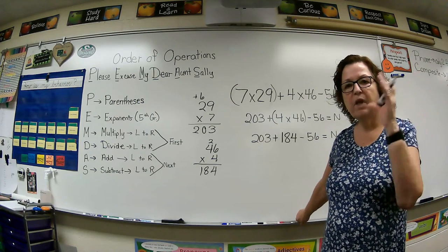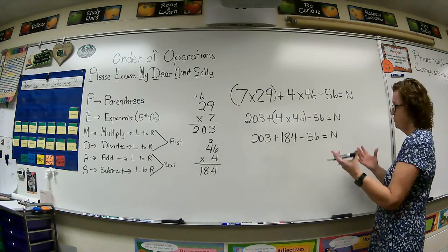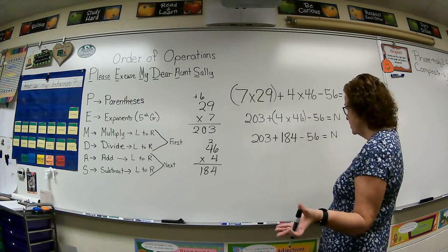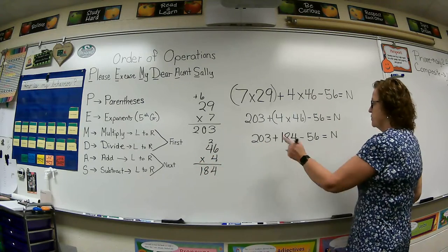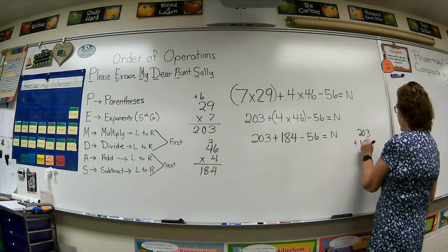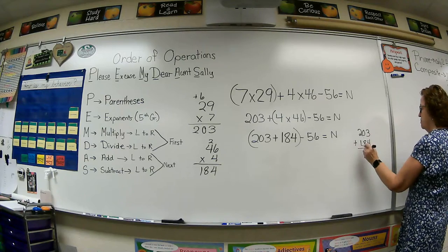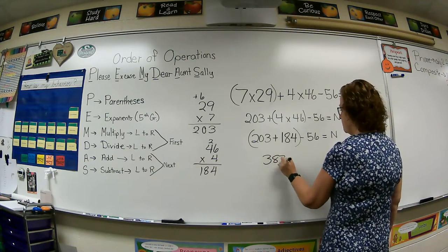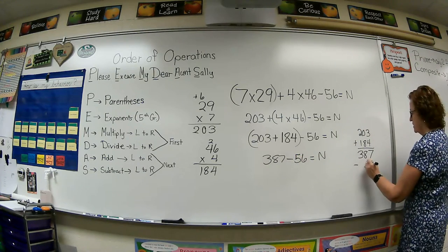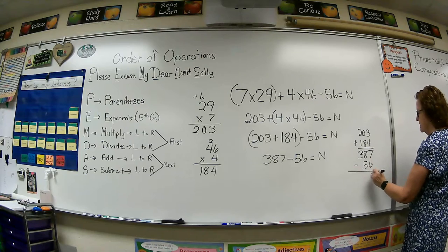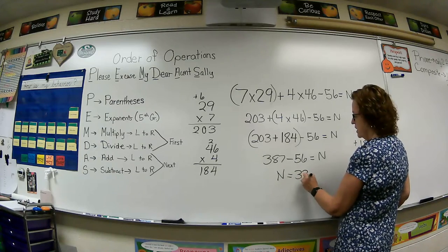I don't know about you, but it's kind of fun to work it through and work it down and keep going through our order of operations. So, taking care of all multiplication, all division, and now we've got some adding and subtracting. Well, according to our order of operations, we go left to right on that. So we're going to do 203 plus 184 first. 3 plus 4 is 7. 0 plus 8 is 8. 2 plus 1 is 3. So 387. Bring this part down. Minus 56 equals N. I'm going to do 387 minus 56. 7 minus 6 is 1. 8 minus 5 is 3. Bring your 3 down. So N is equal to 331.